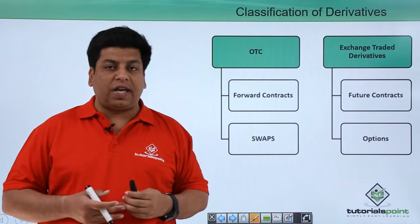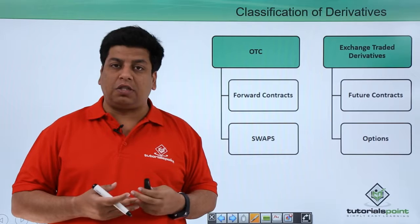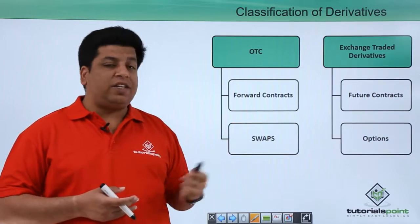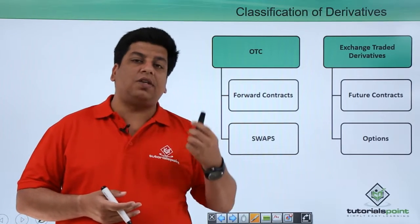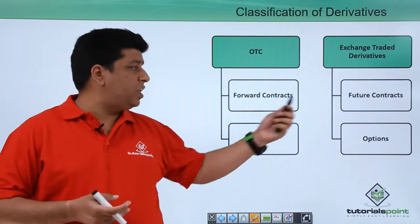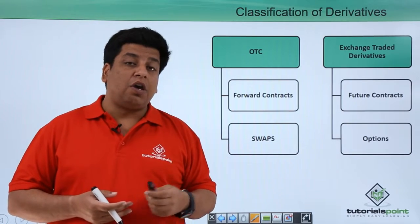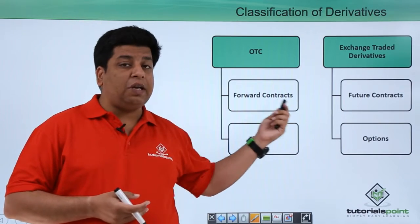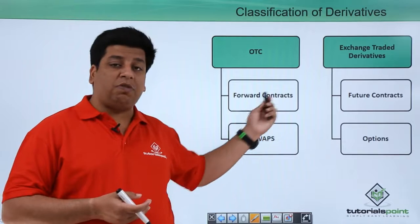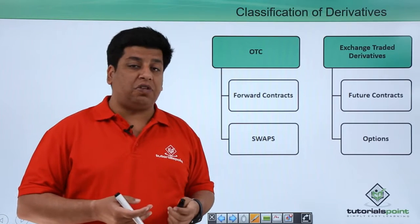Forward contracts and swaps fall under the category of OTC, that is over-the-counter, which we discussed in the previous video. Exchange-traded derivatives consist of futures and options. We will see each one of them in our subsequent videos.